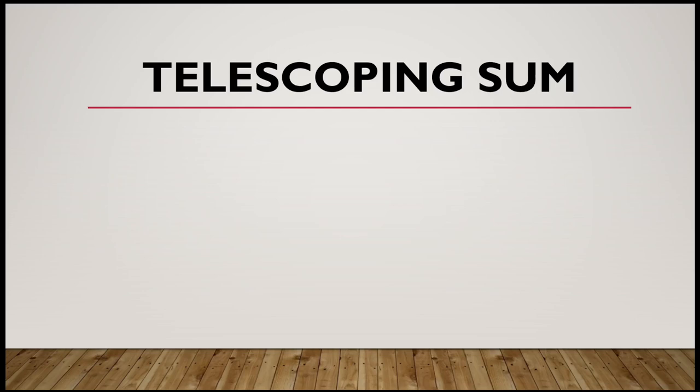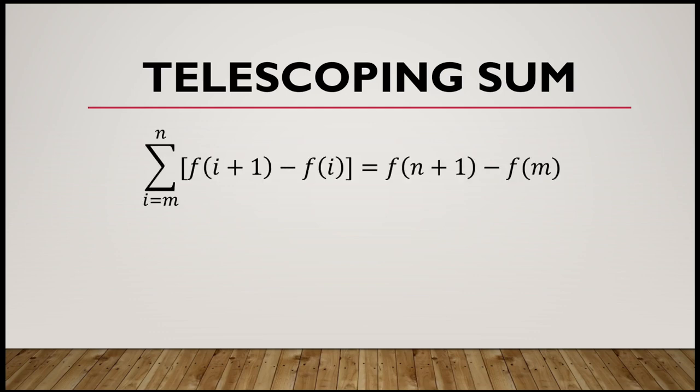Today we are going to talk about a special type of series in which the terms, especially the middle terms, except for the first and the last term, cancel out. This special type of series is called a telescoping sum. If our series can be written in sigma notation in the form summation of f(i+1) minus f(i) from i equals m to n, it can be simplified to f(n+1) minus f(m).